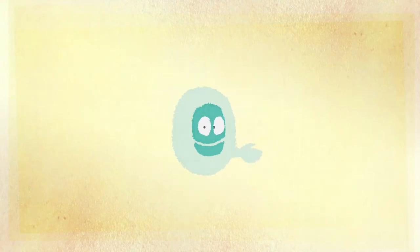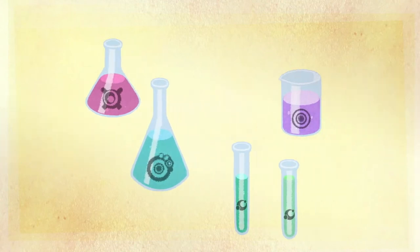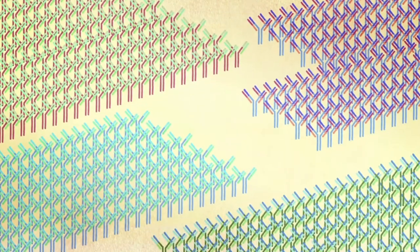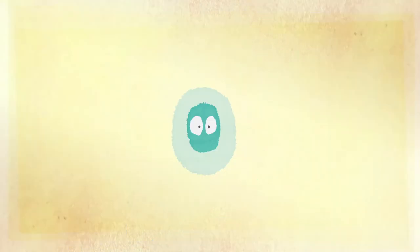In the laboratory, we are now able to produce antibodies that carry out a single specific action. We also know how to multiply these antibodies in large quantities. These are called Monoclonal Antibodies, Mono meaning one action and Clone because they are multiplied identically.